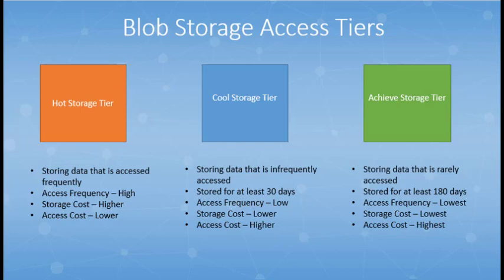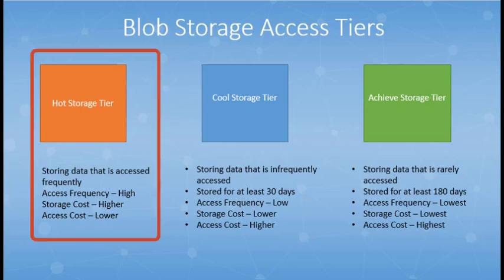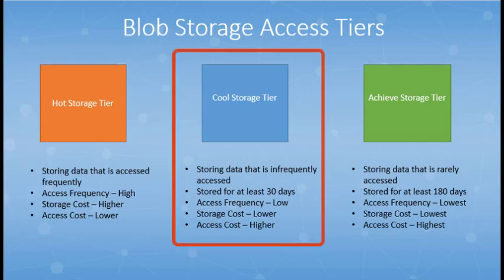First, the hot storage access tier. Second, the cool storage access tier. And the third is the archive storage access tier. The hot access tier is optimized for frequent access of objects in a storage account. Accessing data in the hot access tier is the most cost-efficient, while the storage costs are higher. The cool access tier is optimized for storing large amounts of data that is infrequently accessed and is stored for at least 30 days. Storing data in the cool access tier is the most cost-efficient, but accessing data is more expensive.